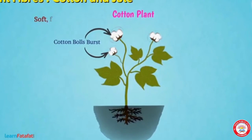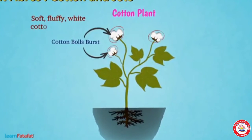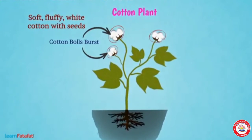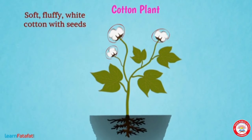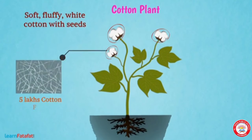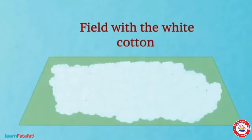After maturing, the balls burst open and the seeds covered with cotton fibers can be seen. From one cotton ball we will get around 5 lakh cotton fibers. With the white cotton, it looks like a field covered with snow.